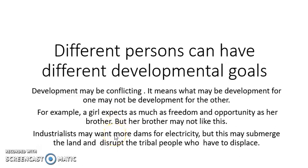The second example is that industrialists may want more dams for electricity, as electricity is a prerequisite for industrial expansion. So they may want more dams, but building dams can submerge the land and displace tribal people. So it cannot be development for tribal people, but it can be development for industrialists. This is what is meant by different persons having different developmental goals.